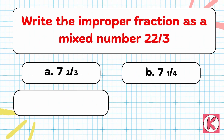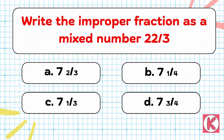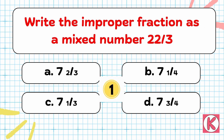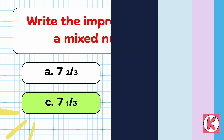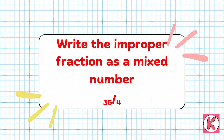Next question. Write the improper fraction as a mixed number: 22 by 3. Correct answer: Option C — 7, 1 by 3.